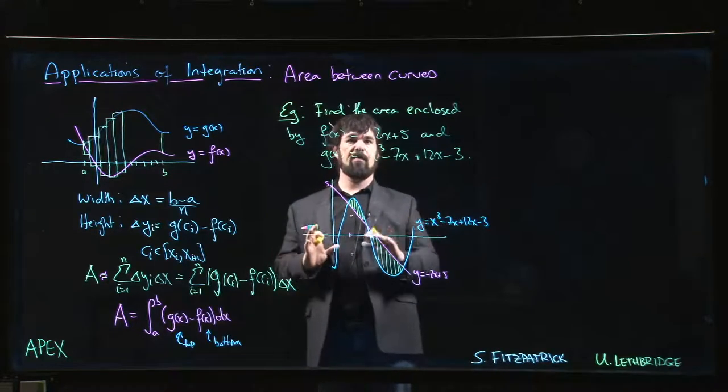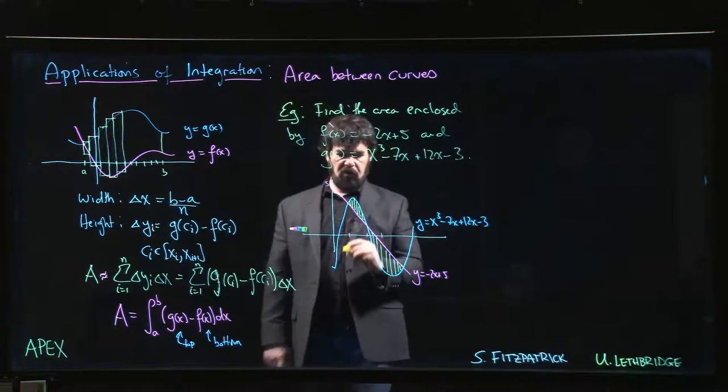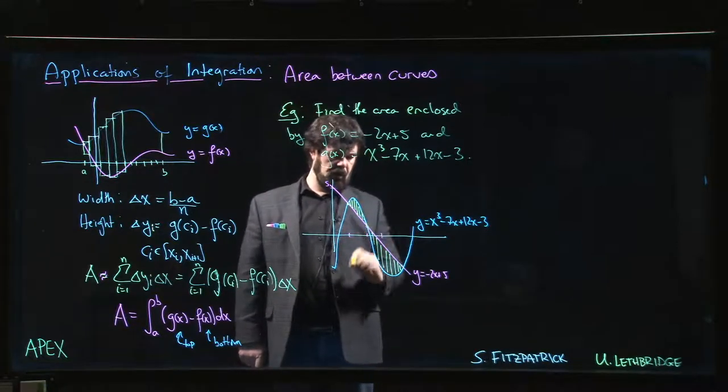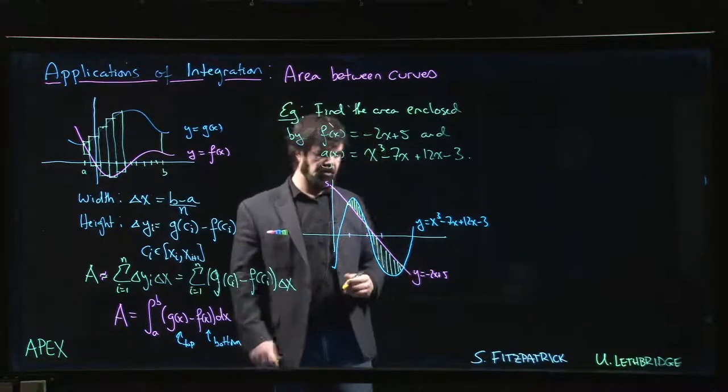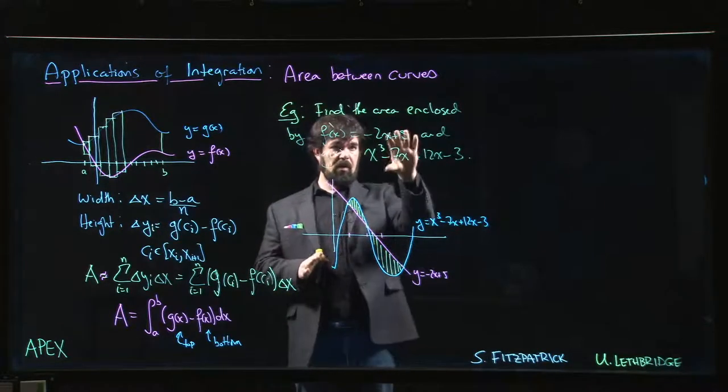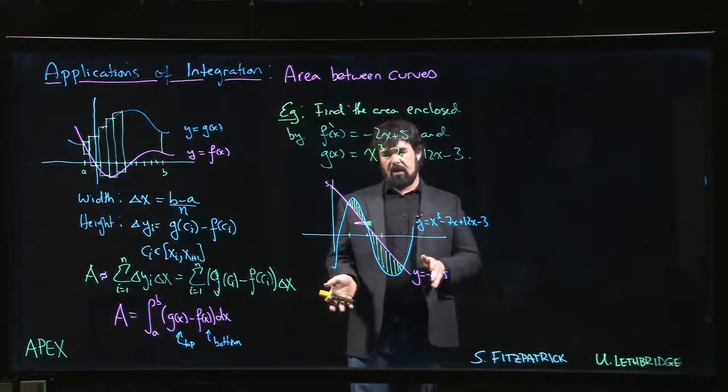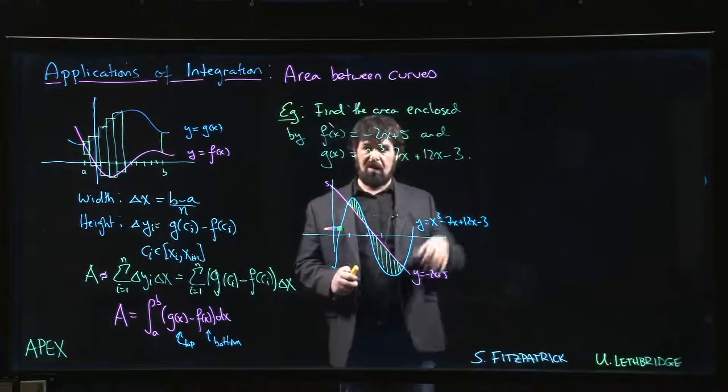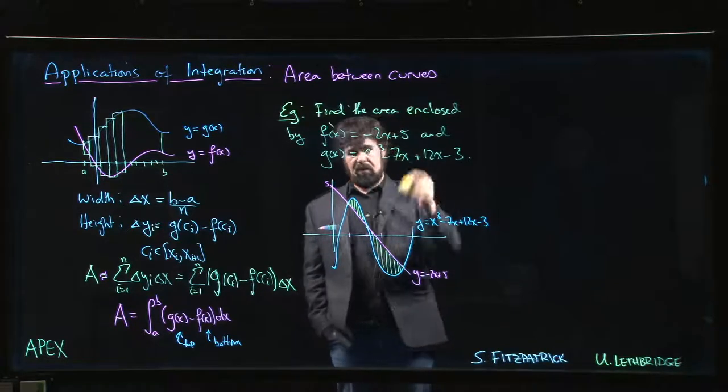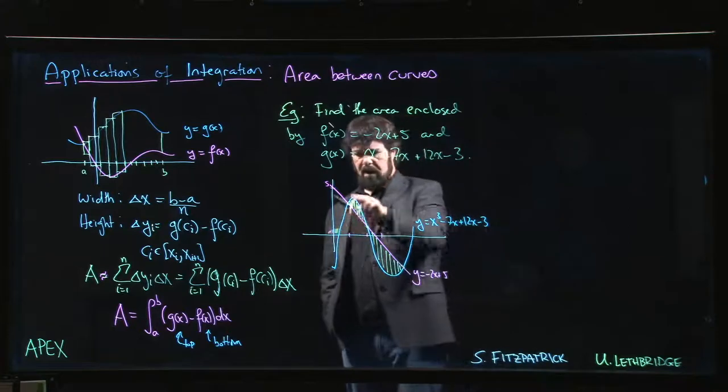So the first things you look for in any kind of area between curves problem, if you're not given a region, is you've got to figure out where are those points where the curves actually cross. That's going to define your region of integration and let you know if there are any added complications. This particular cubic is not so easy to graph by hand because the intercepts are actually not nice. The zeros for this particular cubic are irrational.